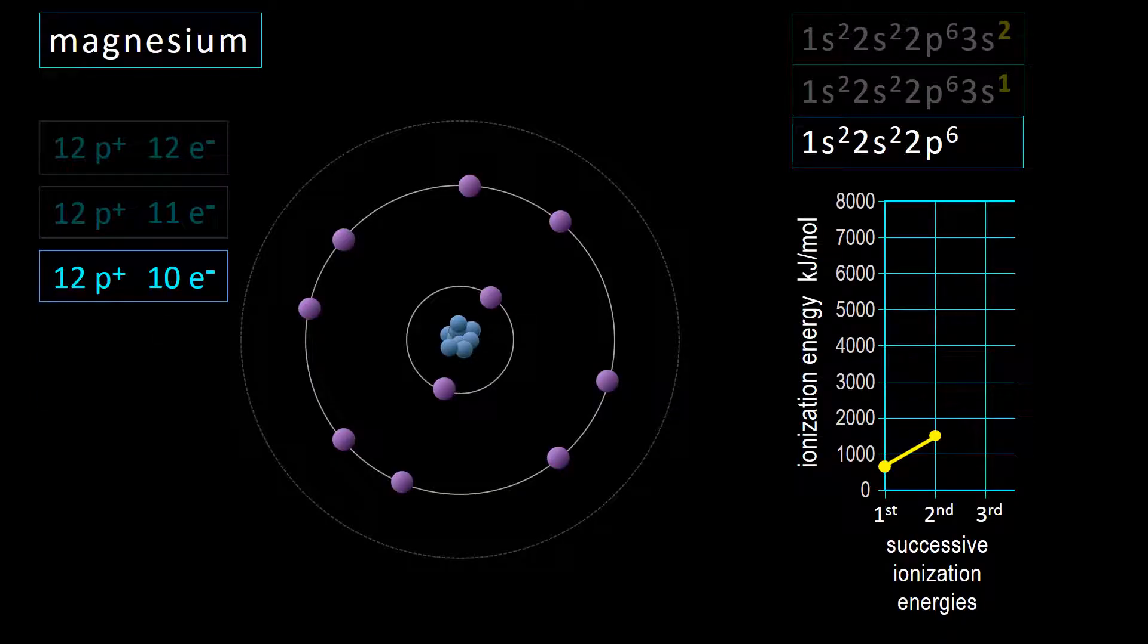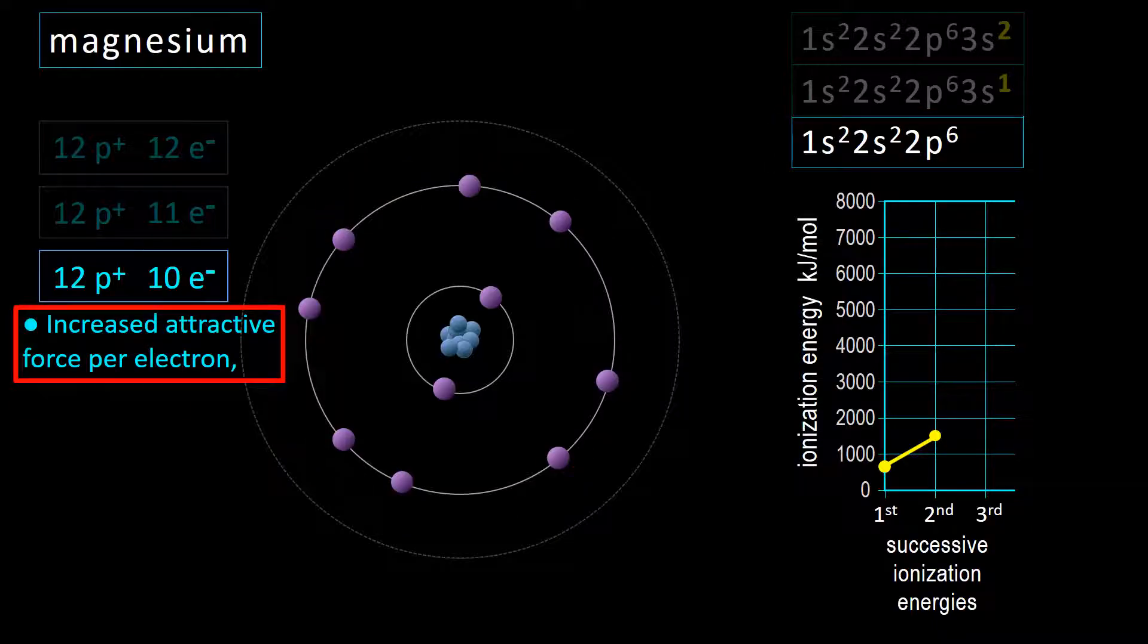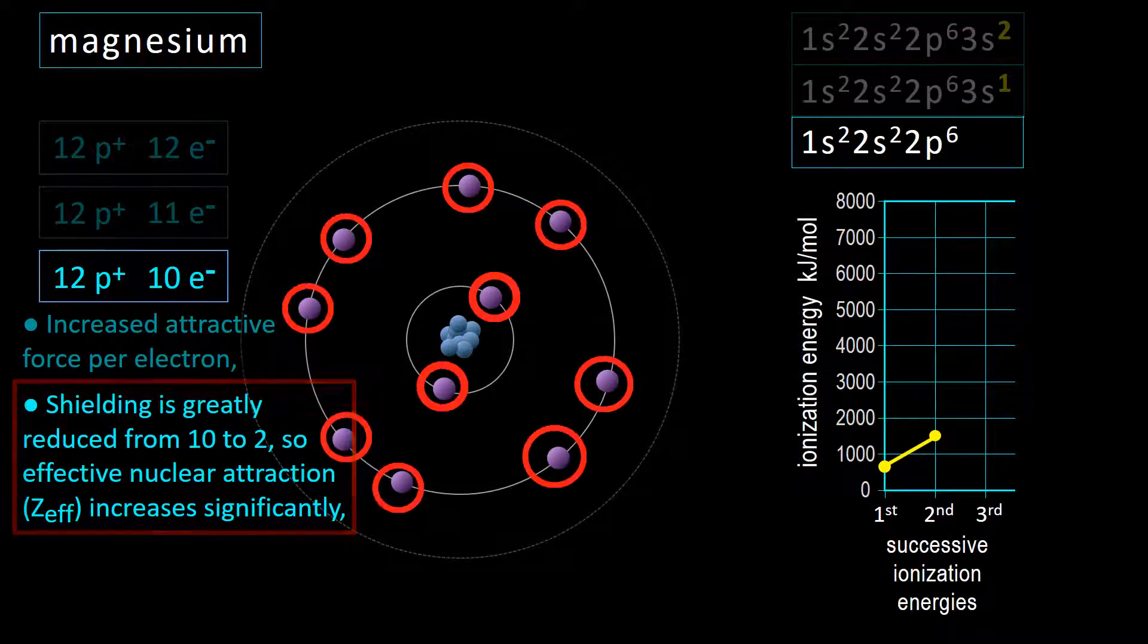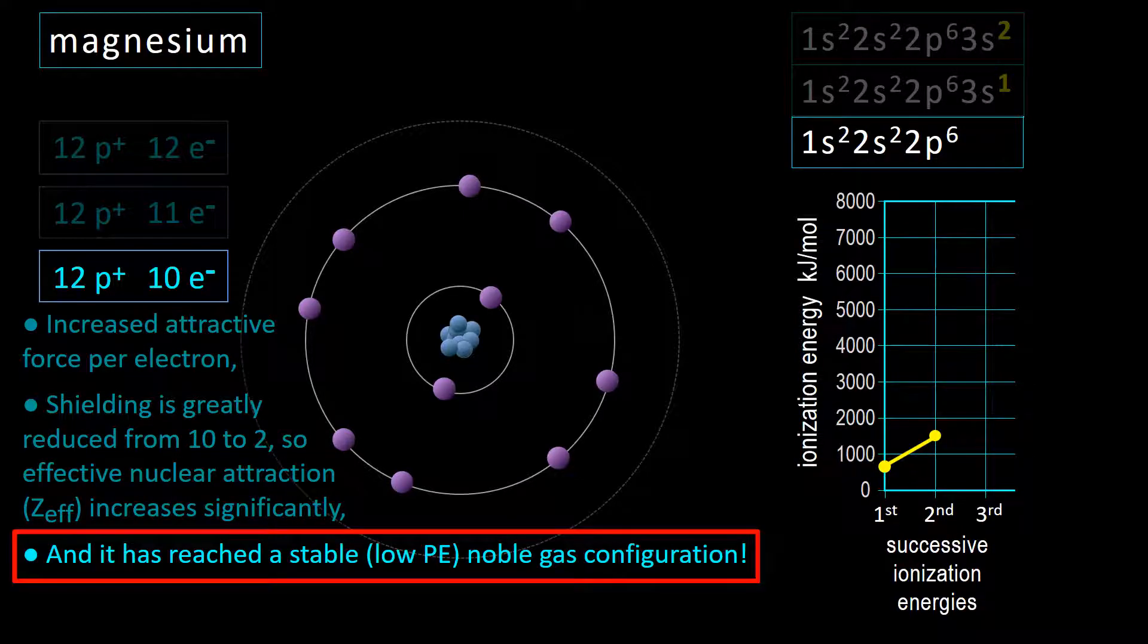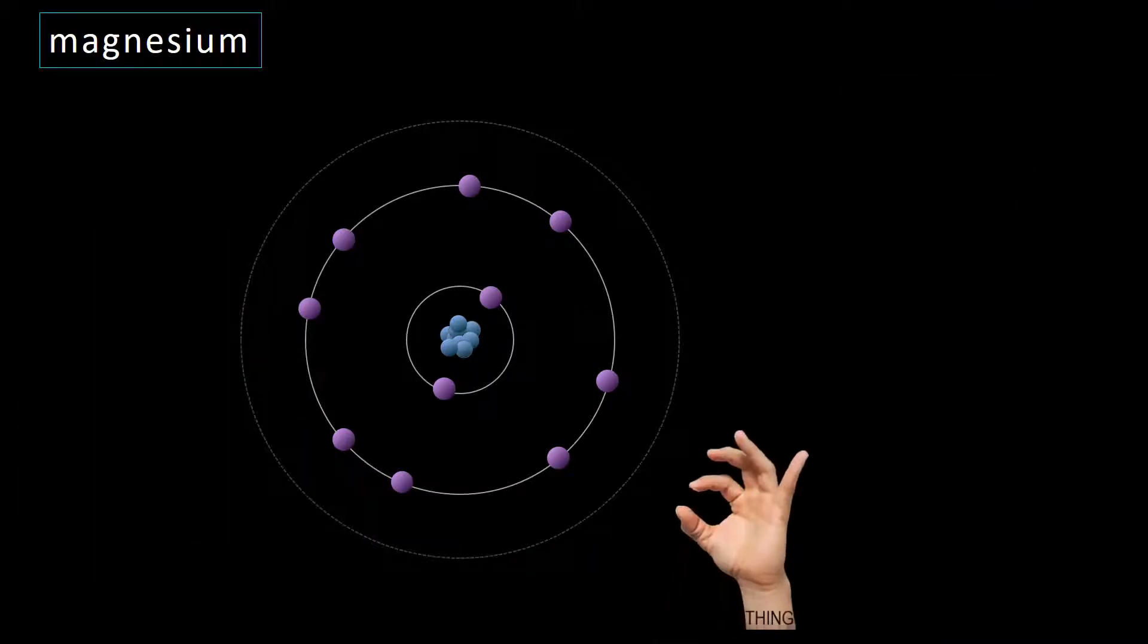Notice that magnesium is now a 2+ ion and has reached a stable neon configuration with even more attractive force per electron. But other relevant changes have occurred as well. Shielding is greatly reduced from 10 to 2, so effective nuclear attraction, or Zeff, significantly increases the attractive force on the current outer electrons. And it has reached a stable noble gas configuration. What will all of that do to the amount of energy required to remove the third electron?